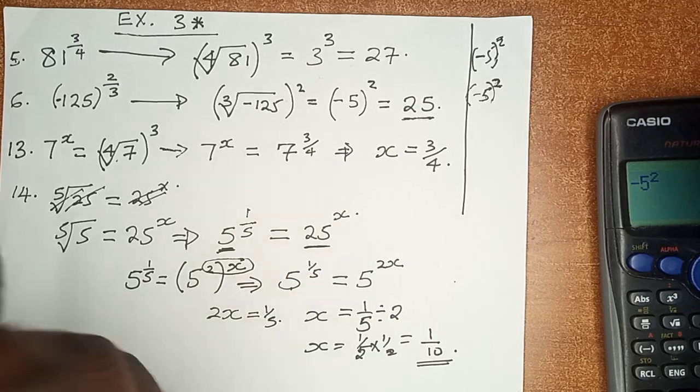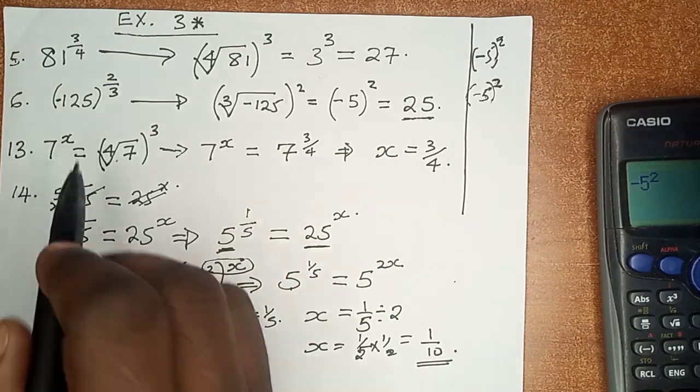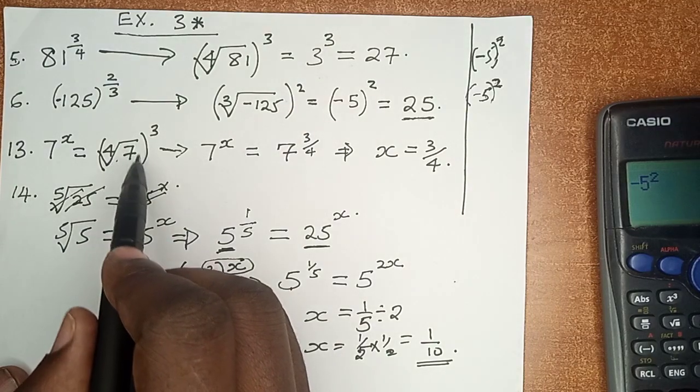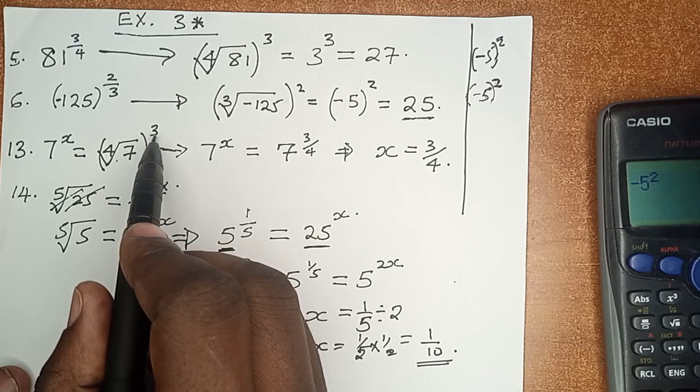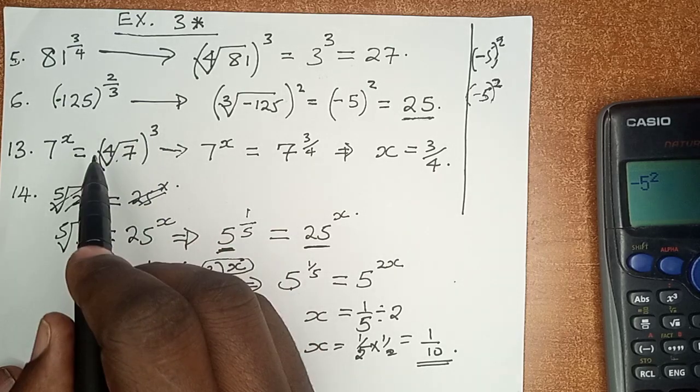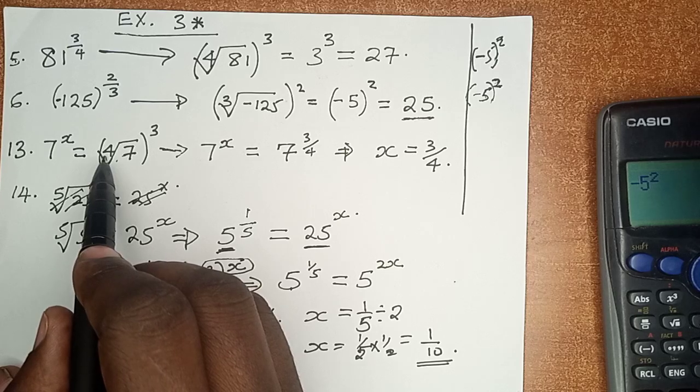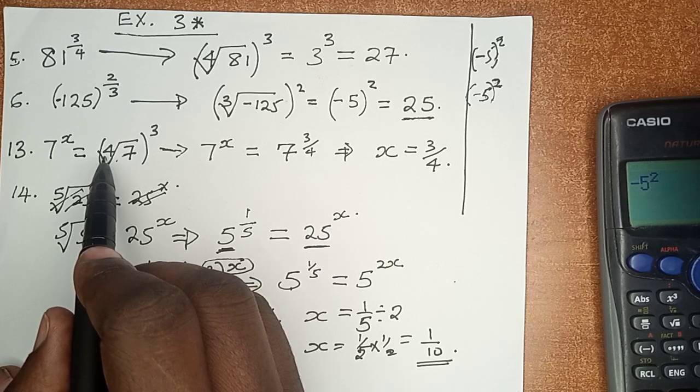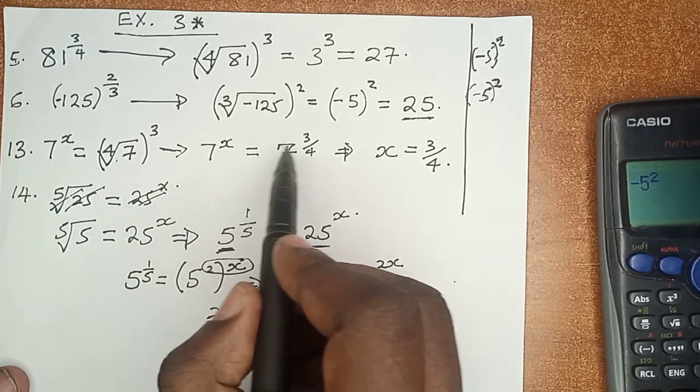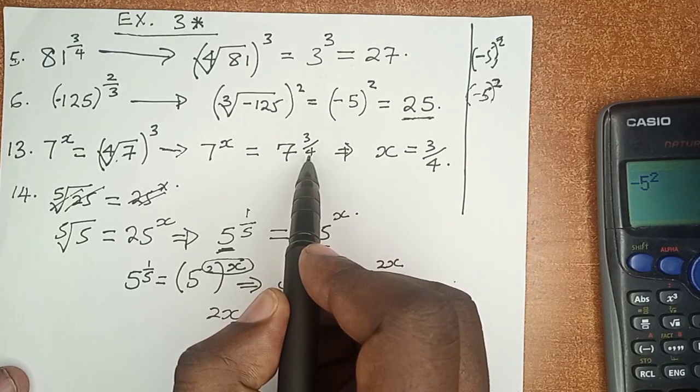Number 13: 7 raised to power x is the same as the 4th root of 7, again everything raised to power 3. And this is just a fractional index in reverse because at this position, you have to realize that 4 was at the denominator position. So 7 raised to power x is equals to 7 raised to power 3 over 4.